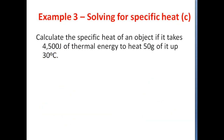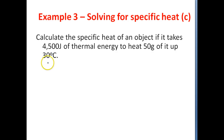Example three: calculate the specific heat of an object if it takes 4,500 joules of thermal energy to heat 50 grams of it up 30 degrees Celsius. So we have some object that's going to absorb 4,500 joules of energy. It has a mass of 50 grams, and its change in temperature has already been given — it's 30 degrees Celsius. What we are being asked to find is the specific heat. So in this problem we're solving for C.